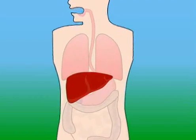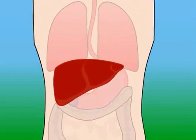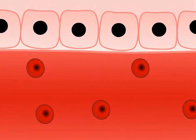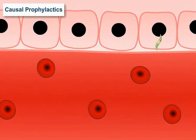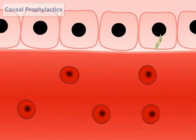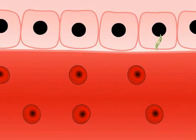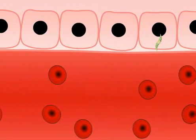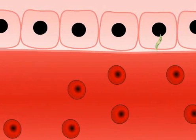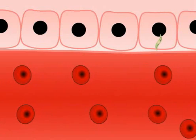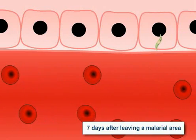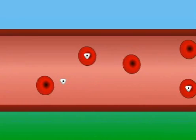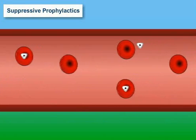Different malaria tablets act at different stages of the malaria parasite life cycle in humans. Antimalarial drugs that act at the liver stage of the parasite are known as causal prophylactics, and prevent the parasite from progressing to infect red blood cells.